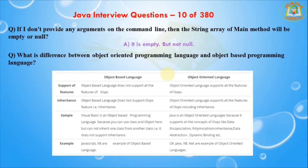If you didn't provide anything in the main method argument, the string array must be empty but it's not null. What is the difference between object-oriented programming language and object-based programming language? From the support point of view, an object-based programming language does not support all the features of OOP, whereas an object-oriented language supports all the features of object-oriented programming, which include abstraction, inheritance, and polymorphism.